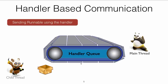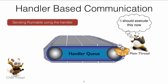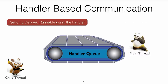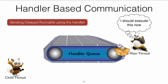The child thread can also create a runnable, send it onto the queue, and the main thread receives the runnable and executes it. Additionally, the child thread can deliver something delayed — it can create a message and indicate it should be delivered after, say, two seconds. After two seconds have passed, the message gets delivered to the main thread, which receives and executes the runnable.